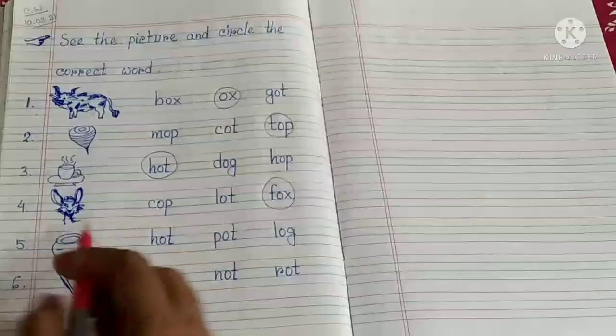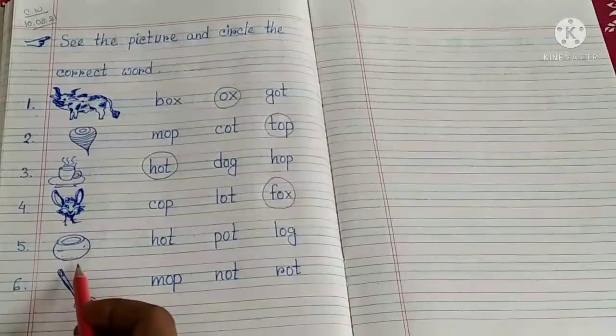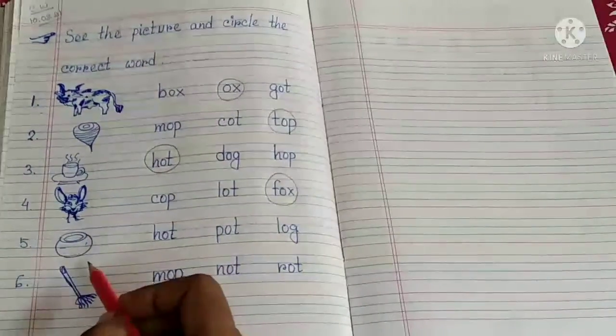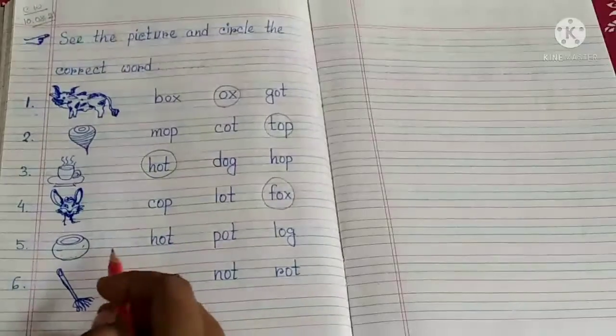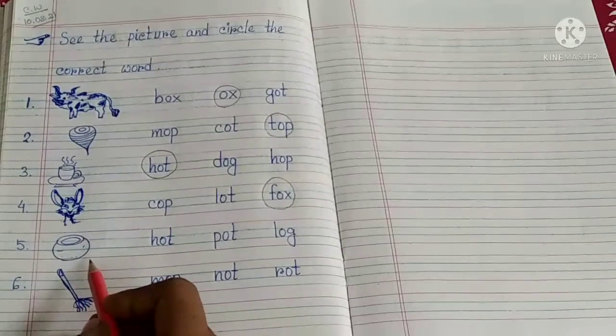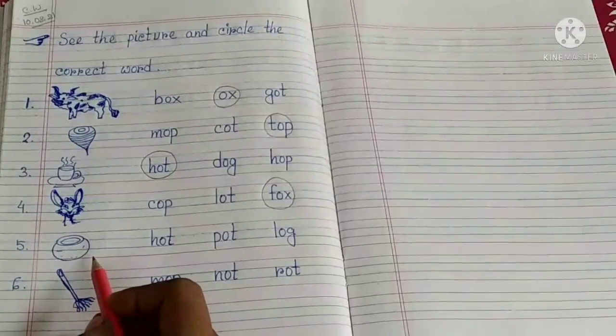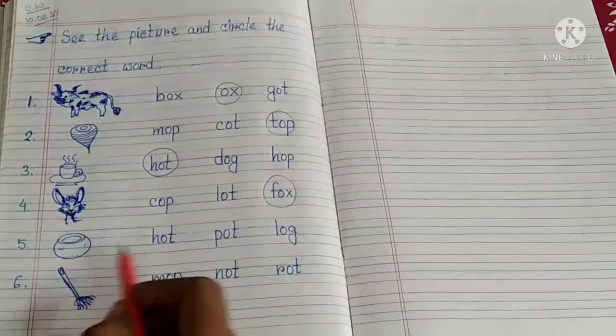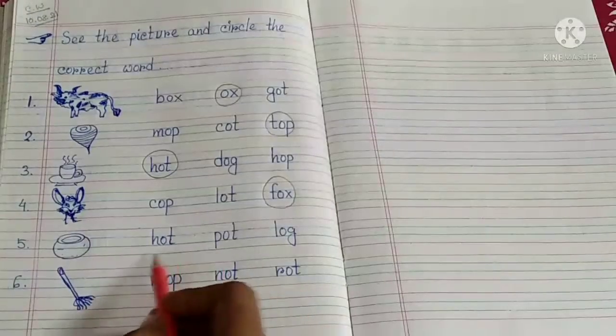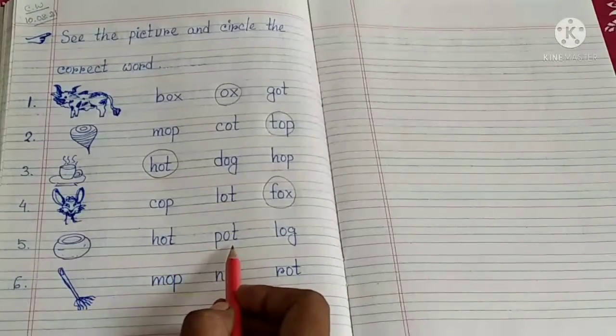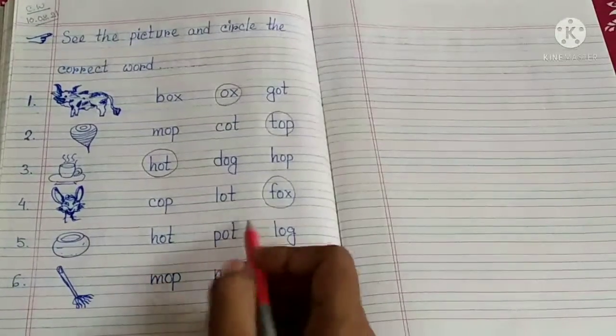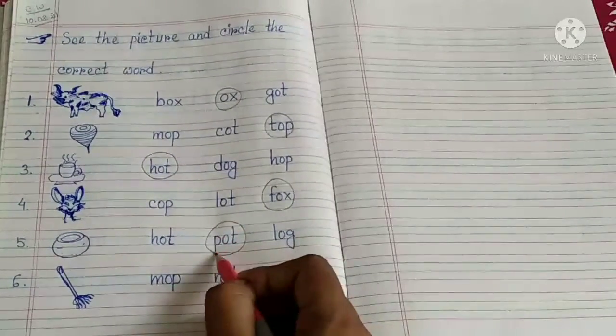Very good children. Number 5. What is this, children? This is a pot. So say the spelling of pot: P-O-T, pot. Let's find the word from here. Hot, pot. So we got it. Let's circle it.